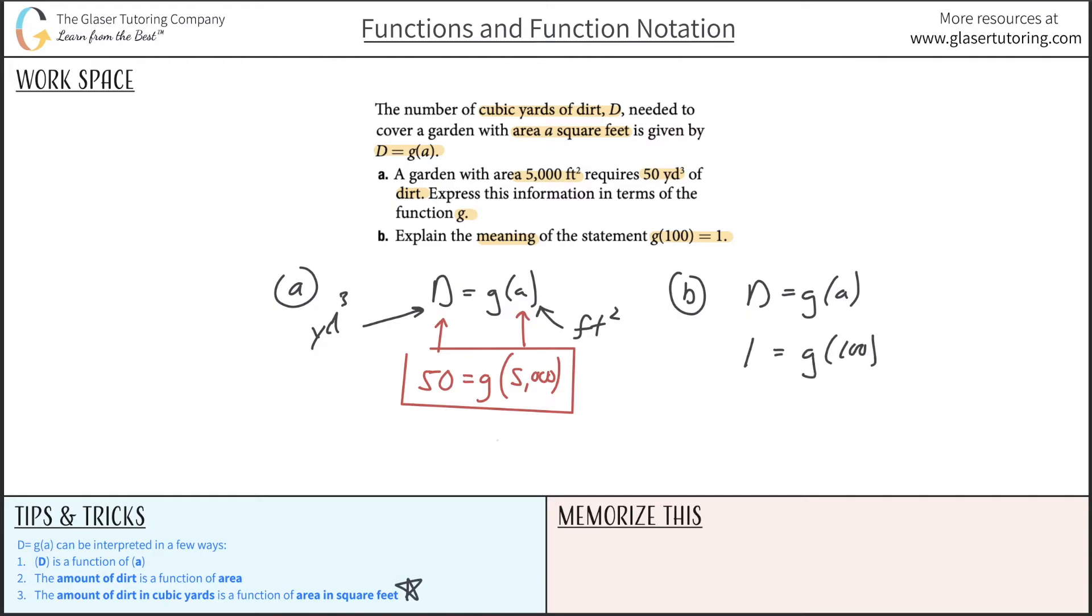Now what we can do is interpret this appropriately. Basically the d here represents the value of 1 and the a here represents the value of 100. Remember, d represents the amount of dirt in cubic yards, and how many cubic yards of dirt do we have here? It says one.